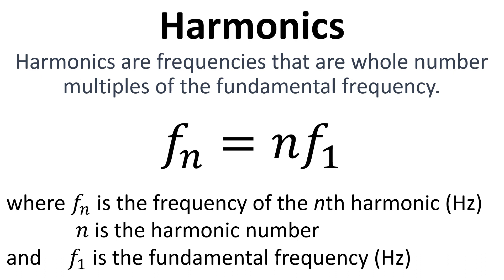Now the equation that we can use to calculate harmonics is shown here and harmonics are the frequencies that are whole number multiples of the fundamental frequency. We have F subscript n for the frequency of the nth harmonic, n itself is the harmonic number and F1 is the fundamental frequency.